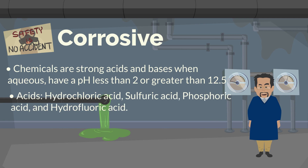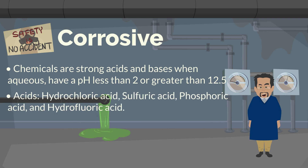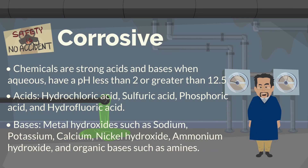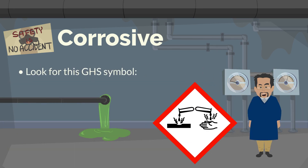A few acids considered corrosive are hydrochloric acid, sulfuric acid, phosphoric acid, and hydrofluoric acid. Common bases include metal hydroxides such as sodium, potassium, calcium, nickel hydroxide, ammonium hydroxide, and organic bases such as amines. Look for this GHS symbol.